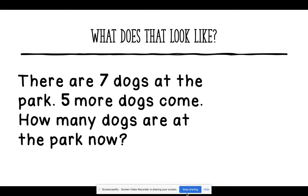So what does that look like? Let's look at this example. First, we need to read. There are seven dogs at the park. Five more dogs come. How many dogs are at the park now?